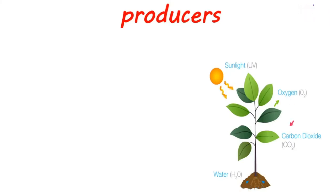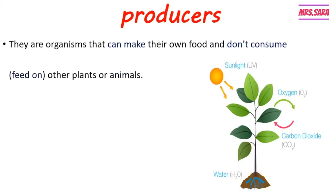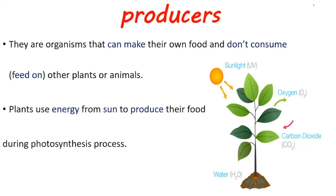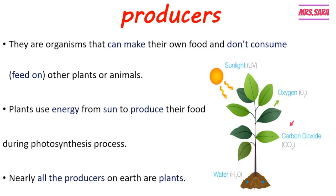Group number one: producers. Producers are organisms that can make their own food and don't consume other plants or animals. Plants use energy from the sun to produce their own food, like glucose sugar, during the photosynthesis process. So all the producers on Earth are plants.